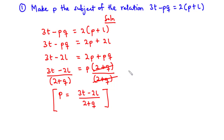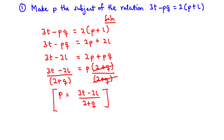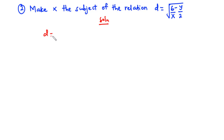Now let's move on to example two: make x the subject of the relation d equals the square root of open bracket 6 over x minus y over 2 close bracket. We write down the relation: d equals the square root of 6 over x minus y over 2.